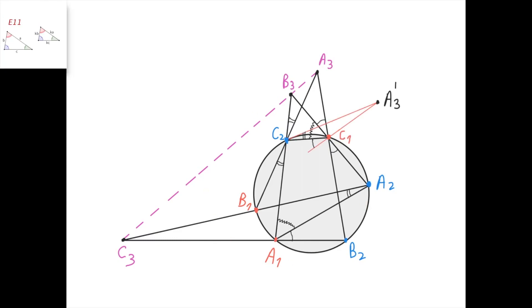First, notice that triangle A1, A2, B3 is similar to triangle C1, C2, B3, because from the relevant cyclic quadrilateral this angle equals this angle. Then we see this angle equals this angle, which from another cyclic quadrilateral equals this angle. Also, this angle equals this angle, which from another cyclic quadrilateral equals this angle.